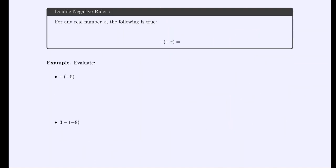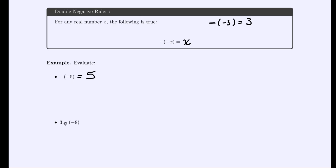One thing to keep in mind: if you ever have minus a negative, that becomes a positive — the double negative rule. Two negatives make a positive. So minus negative 5 becomes positive 5, and 3 minus negative 8 is the same as 3 plus 8, giving us 11.